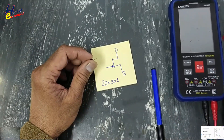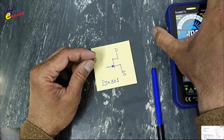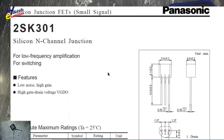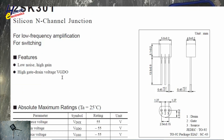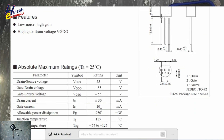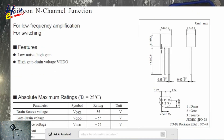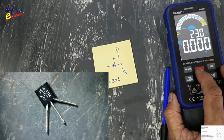To test it, set the multimeter to resistance or diode mode and identify its pins. For that purpose we need the datasheet. The 2SK301 is a silicon junction field effect transistor for small signal, low frequency amplification and switching. Maximum gate-to-drain and gate-to-source voltage is 55 volts, drain current 30 milliamperes. We can operate it in either direction — drain to source or source to drain. Gate current is 10 milliamperes and gate-to-source cutoff voltage is minus 5 volts maximum. Pin 1 is drain, pin 2 is gate, pin 3 is source.